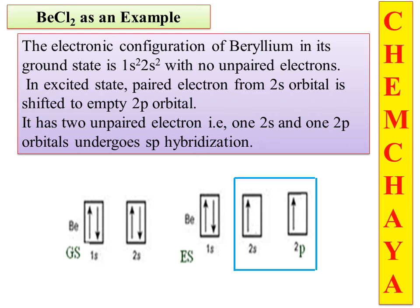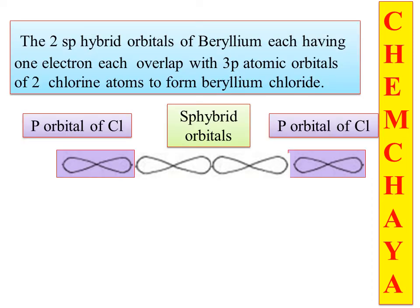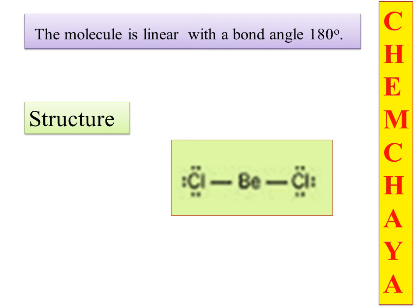The two SP hybrid orbitals in turn combine with the chlorine atoms. Chlorine also has one unpaired electron in its valence 3p orbital. They combine together to form the beryllium chloride molecule, BeCl2. The SP hybrid orbitals react with the p orbital of chlorine to form sigma bonds between Be and Cl. The resulting molecule is linear with a bond angle of 180 degrees.